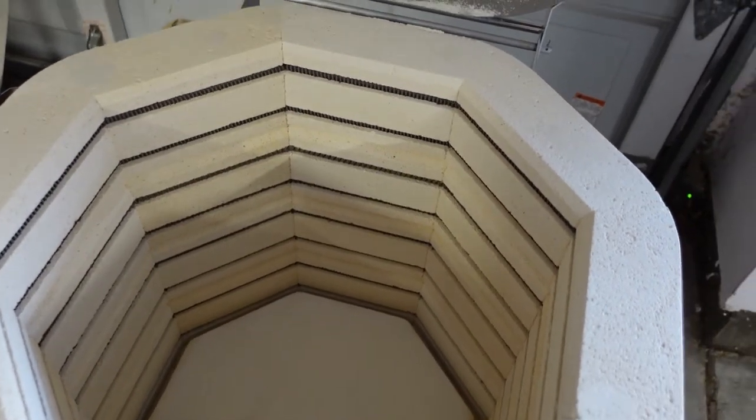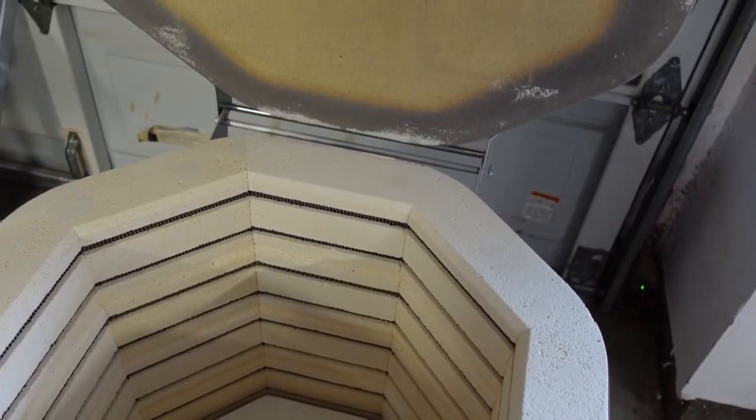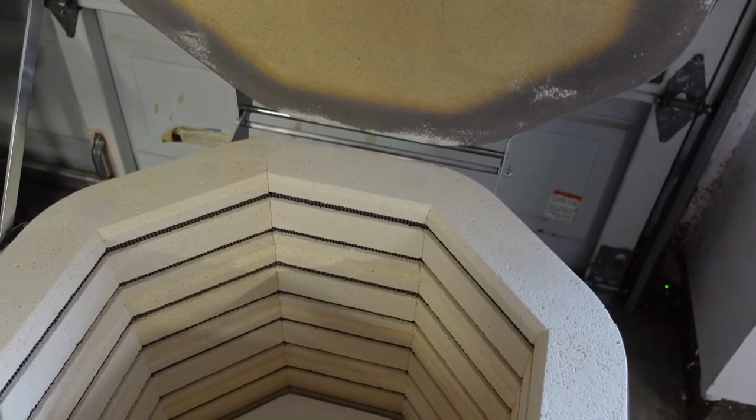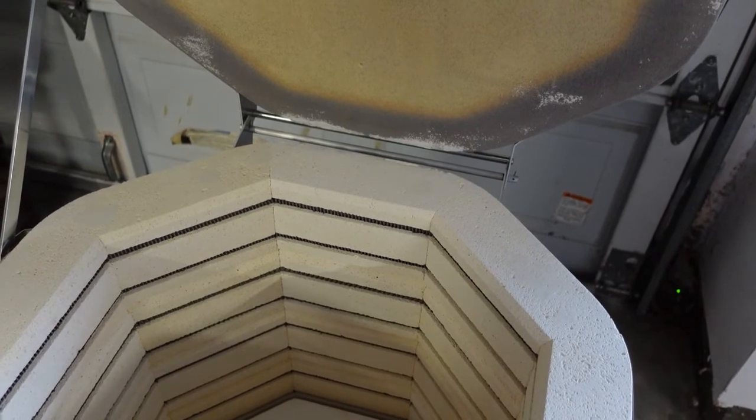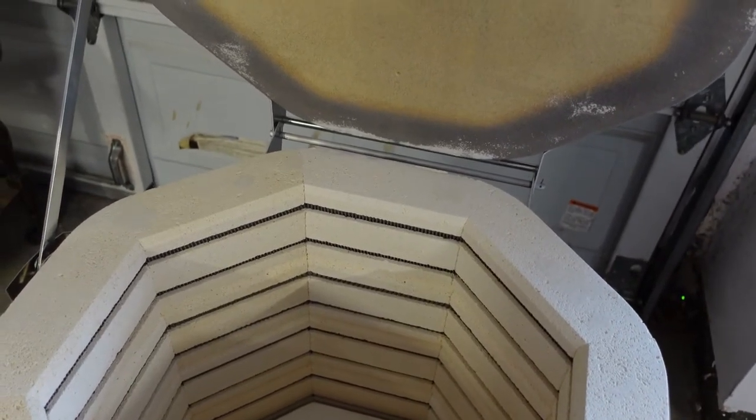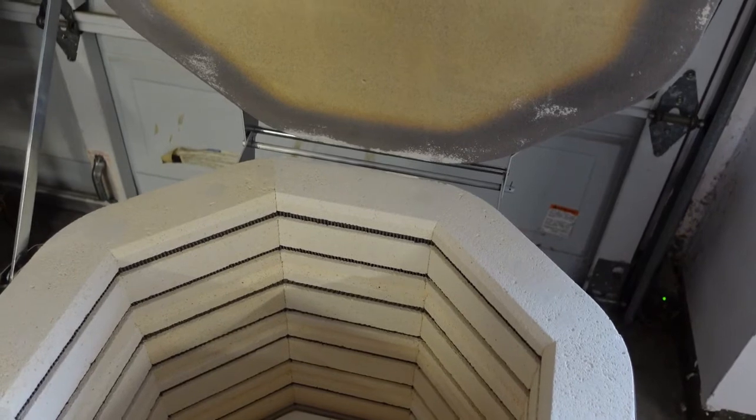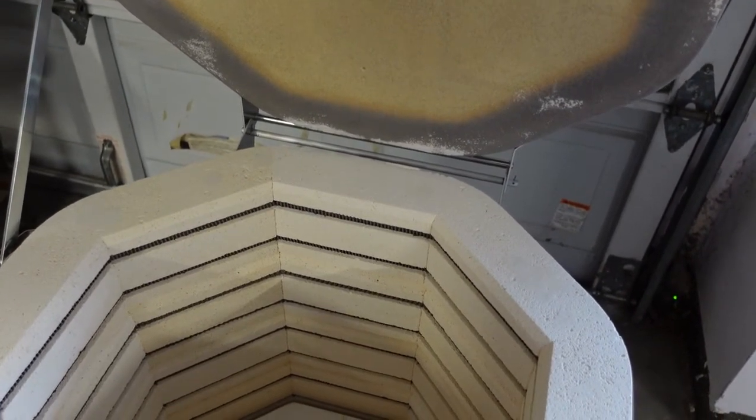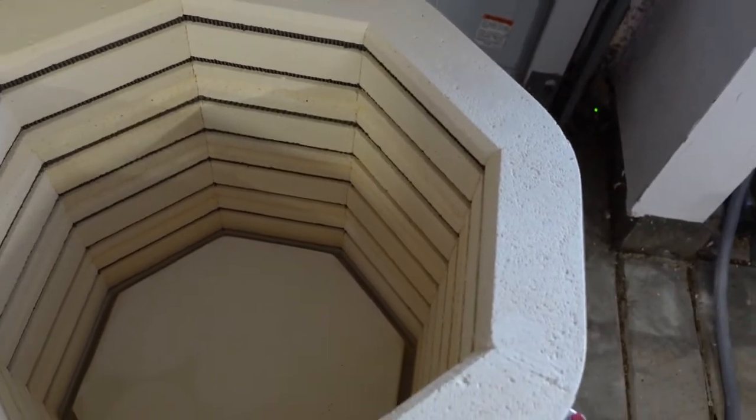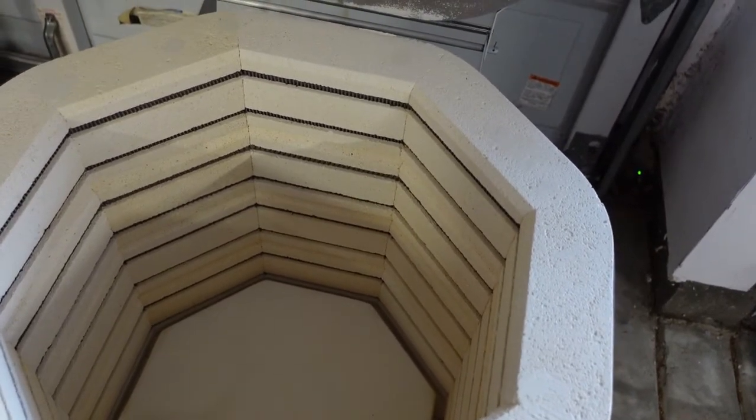This kiln has an option where you can buy it with either 208 or 240 volts. Most residential areas, at least in the state of California and I think mostly in the United States, are 240. So if you buy this kiln, you're probably going to want to buy a 240 volt single phase connection.